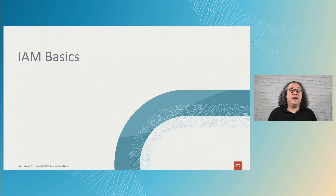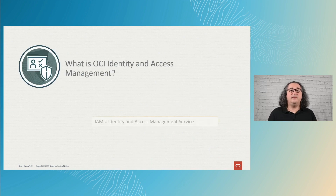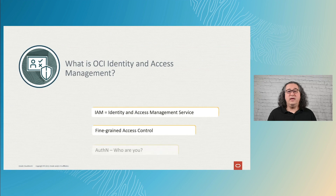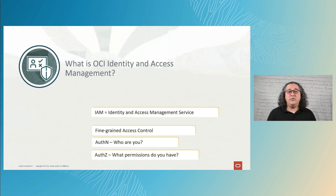We already know that IAM stands for Identity and Access Management, but what does it mean in an OCI realm? IAM is an OCI service, and it controls access to the OCI resources. It ensures that the allowed actors have the proper authentication, and it also ensures that the actors have the right permissions, also referred to as authorization.